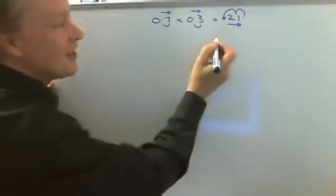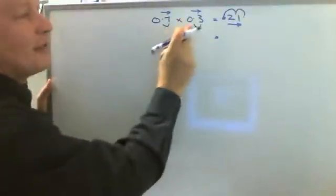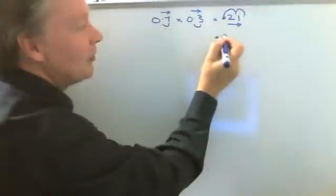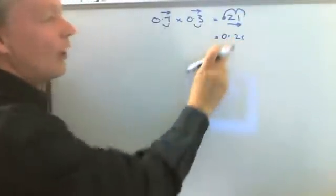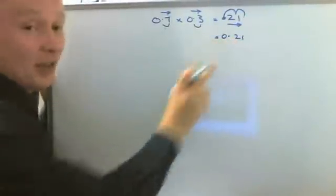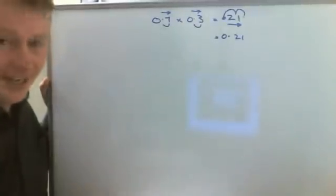So in other words, the answer to 0.7 times 0.3 will be 0.21 to make sure my numbers have moved towards the right hand side.